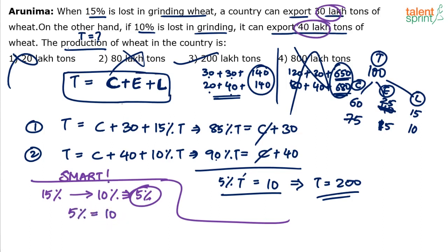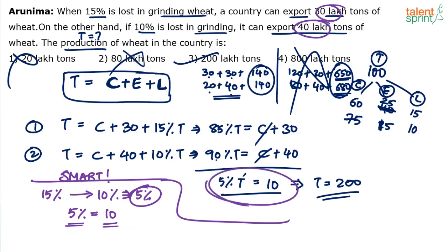This 5% should be equal to 10 lakh tons. Units don't matter — 5% is equal to 10. So 100% is equal to 200. That's the smart way of doing it — you don't have to write all the equations. In Case 1, I lose 15%. In Case 2, I lose only 10%. My saving is 5%, which gets exported. In Case 2, I export 10 more — from 30 it becomes 40. Which means my 5% saving equals 10, and therefore 100% equals 200.